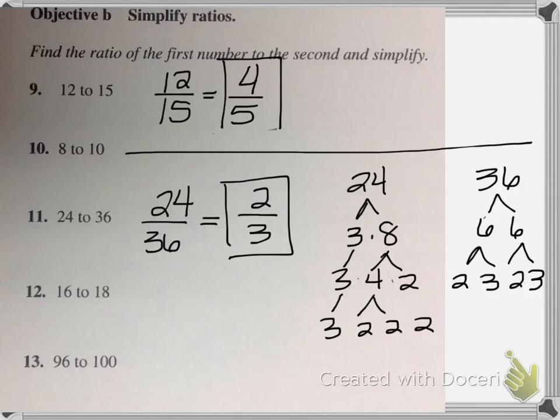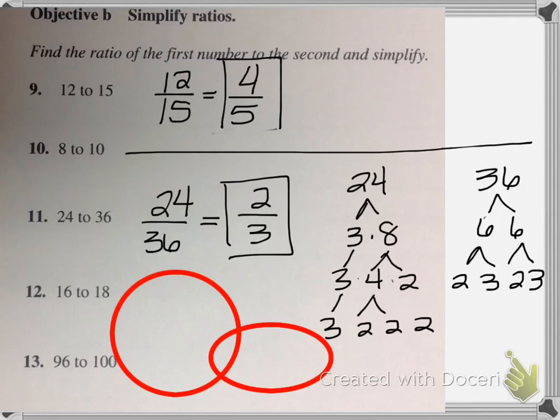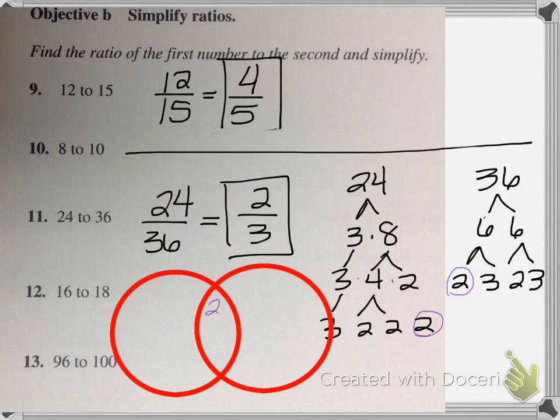So if I think about my circles, what do they have in common? We have a 2, so I'm going to put a 2. And then we have another 2, so another 2 goes in the middle. And I have a 3, so a 3 goes in the middle.